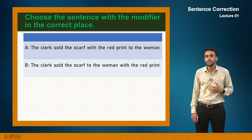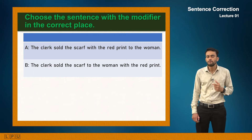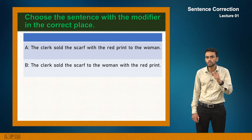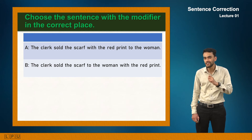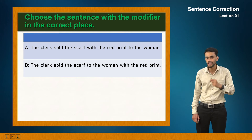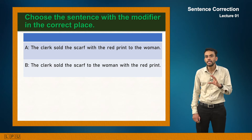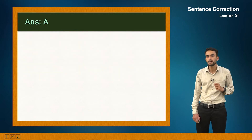Practice question — choose the correct sentence with the modifier in the correct place. Option A: 'The clerk sold the scarf with the red print to the woman.' Option B: 'The clerk sold the scarf to the woman with the red print.' Option B is unclear — it is ambiguous whether the scarf or the woman has the red print. Therefore option A is correct.